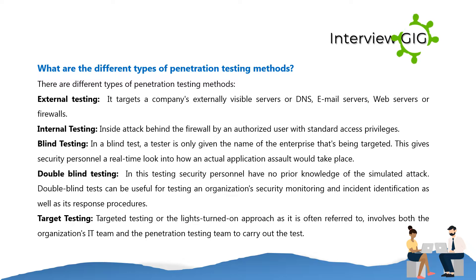There are also different types of penetration testing methods. External testing targets a company's externally visible servers — DNS, email servers, web servers, or firewalls. Internal testing simulates an inside attack behind the firewall by an authorized user with standard access privileges. In a blind test, a tester is only given the name of the enterprise being targeted, giving security personnel a real-time look into how an actual application assault would take place. In double blind testing, security personnel have no prior knowledge of the simulated attack, which is useful for testing an organization's security monitoring and incident identification, as well as its response procedures. Targeted testing, also called the lights-turned-on approach, involves both the organization's IT team and the penetration testing team to carry out the test.